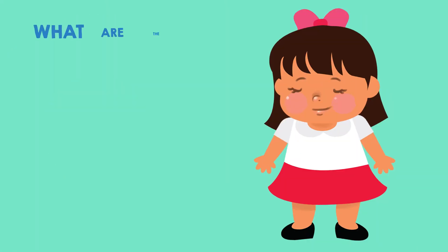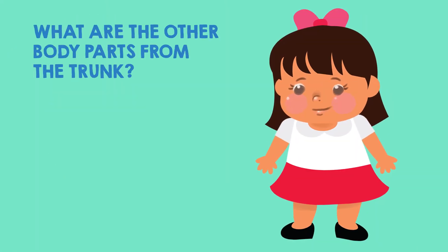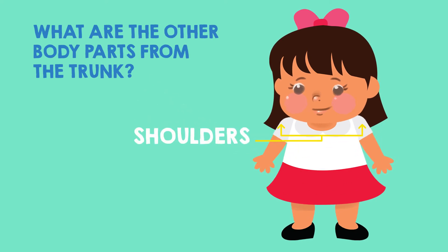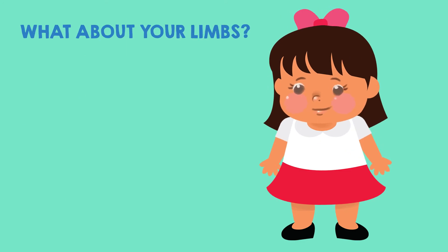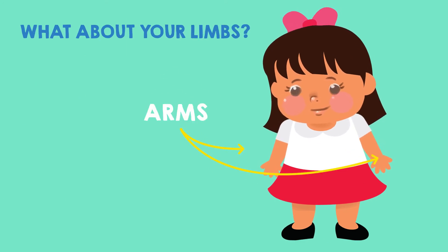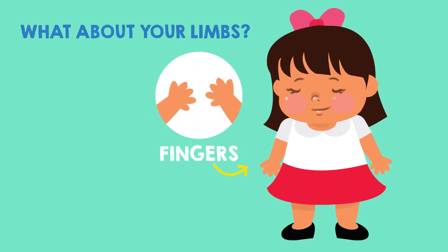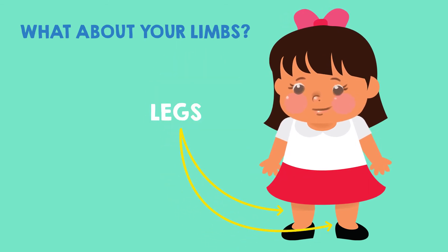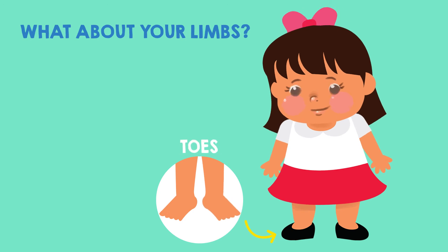What are the other body parts from the trunk? There's the chest, the shoulders, the stomach, and hips. What about your limbs? You have your two arms, which have your two hands and 10 fingers, then your two legs which have your two feet, and again, 10 toes.